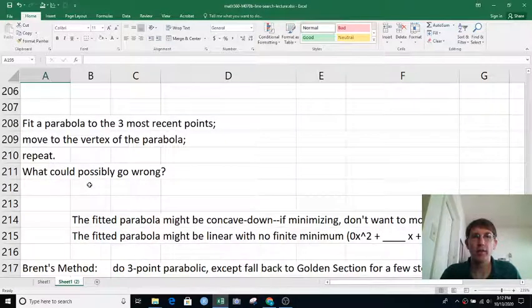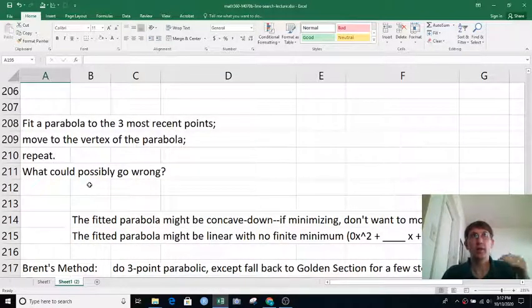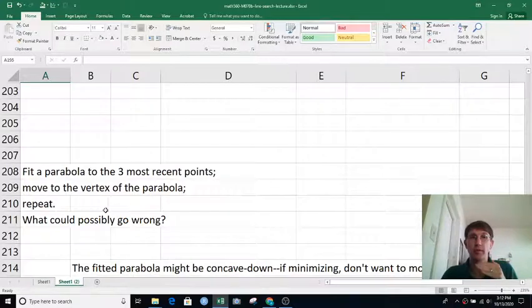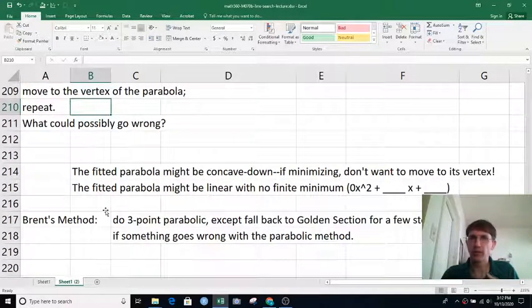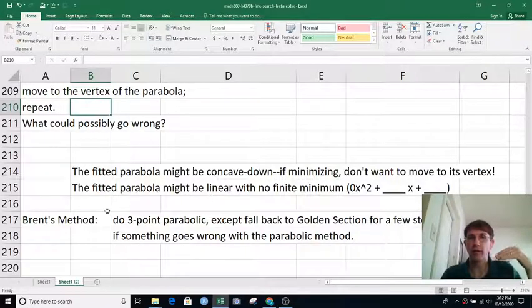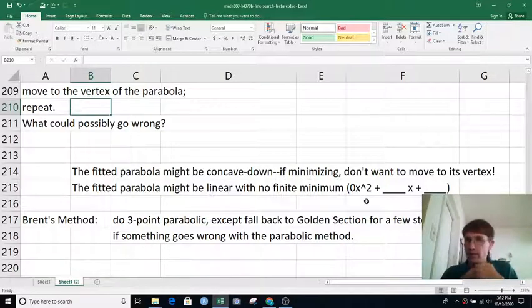It's possible that the fitted parabola, that the three points you have might accidentally be concave down. And so the fitted parabola would have a maximum at its vertex rather than a minimum, which you don't want to move to, probably. It's possible the three points would be exactly collinear. And then your parabola would just be a straight line and you don't want to move off to positive infinity.